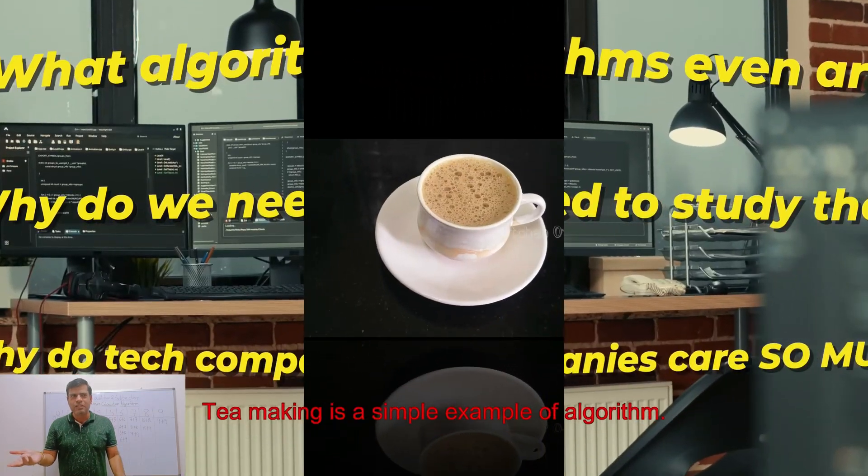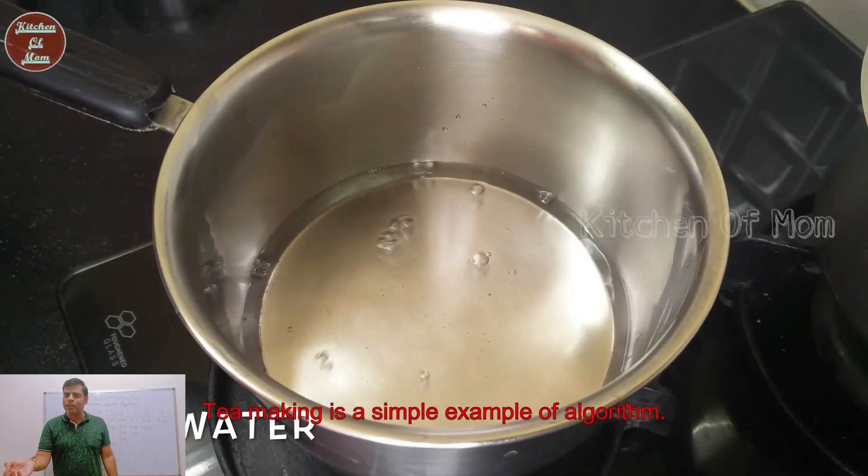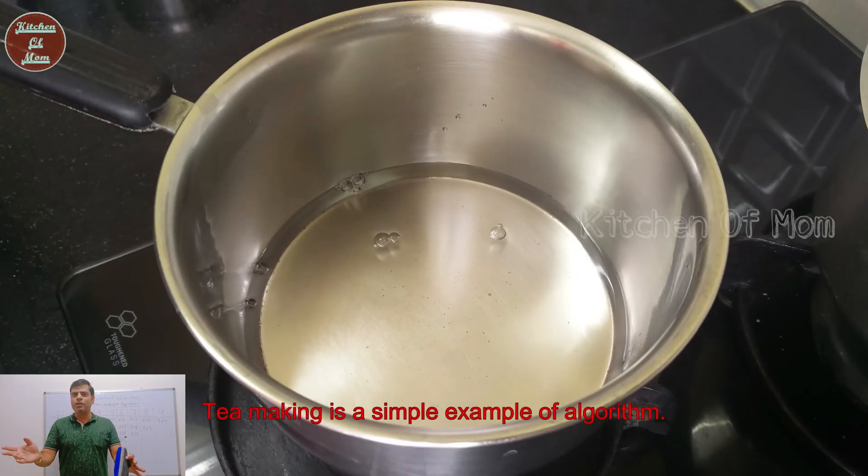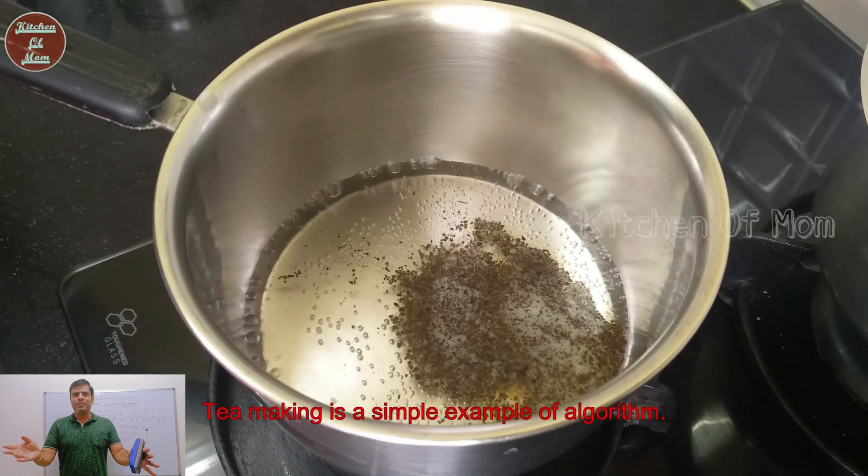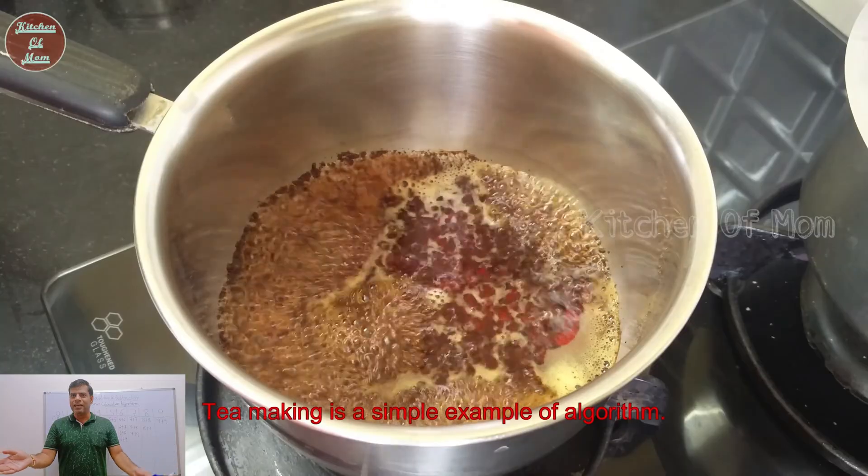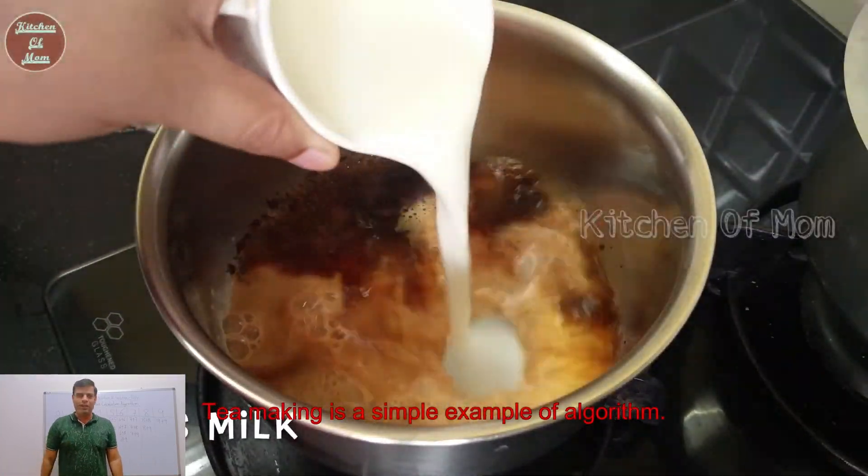For example, to make a tea there is an algorithm that you have to mix water with sugar, with tea bag, with milk and you make a tea. If you want to add ginger or other things also that is fine.